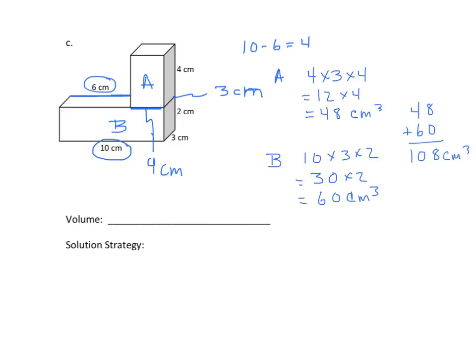Now, our strategies: we had to subtract the length of rectangle B from the distance from the edge of B to the edge of A, and we had to do some subtracting. We also had to look at rectangle B's width to find the width of rectangle A. And then, of course, we combined the two volumes.